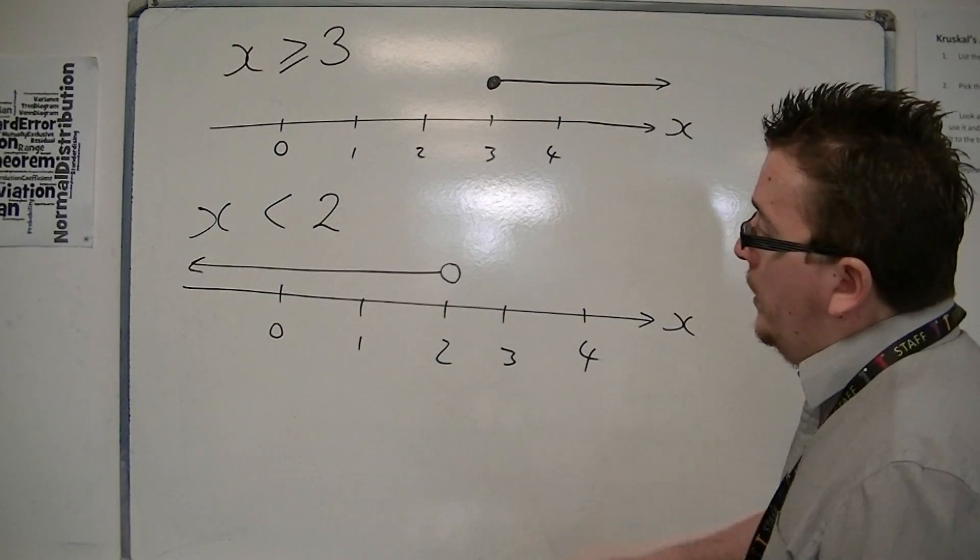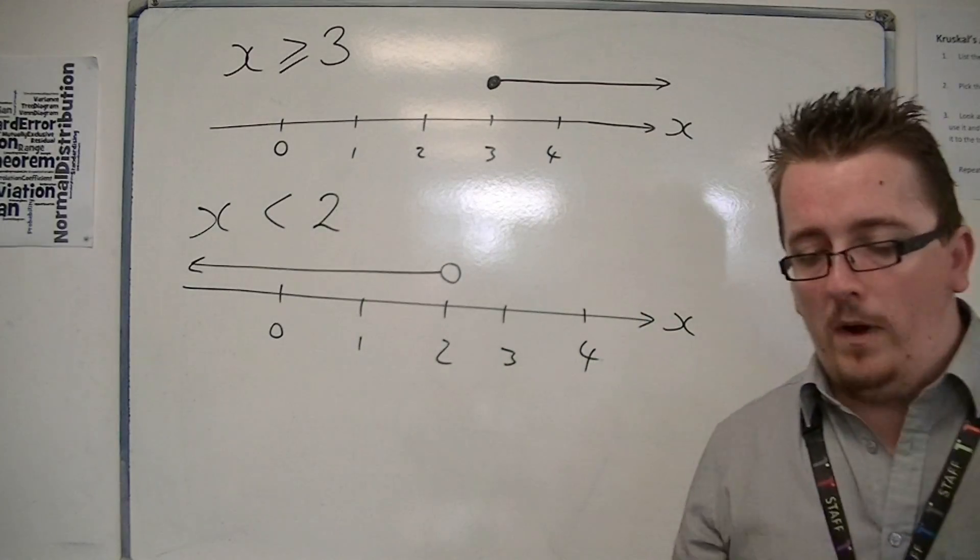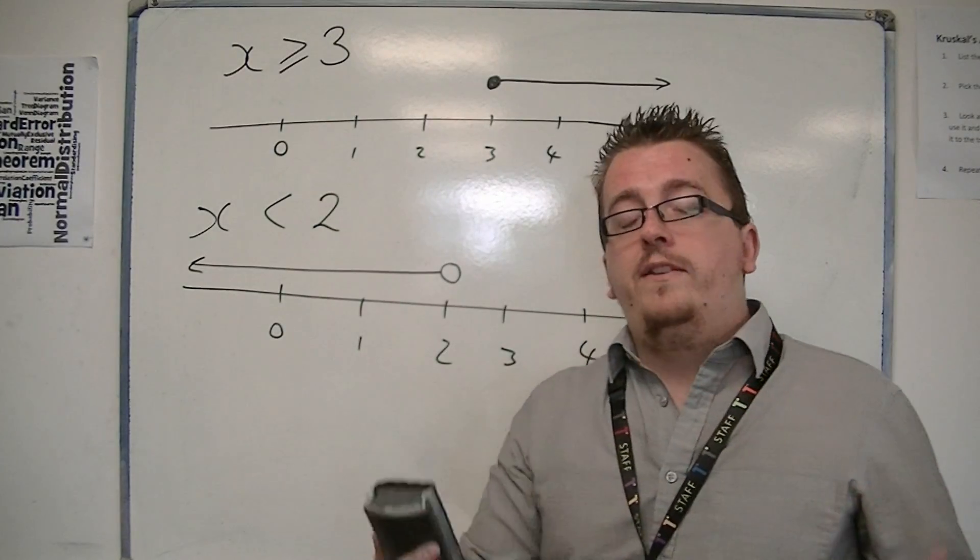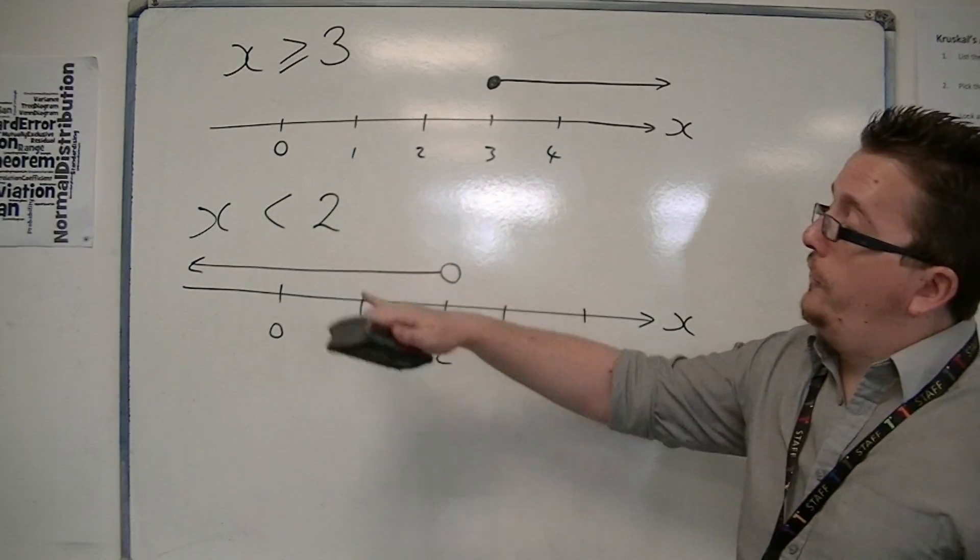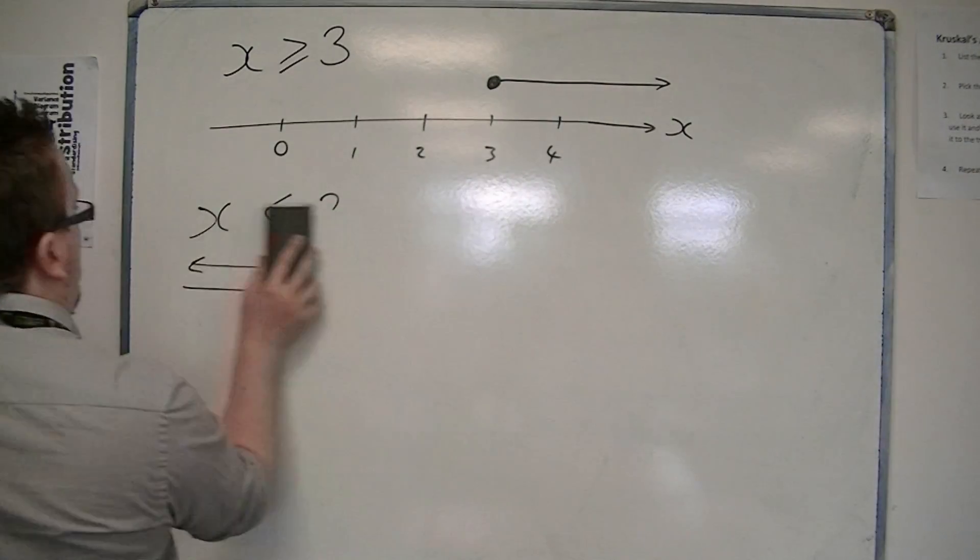And that's how we could represent them on a number line. So this is how inequalities can be represented that way, just using the basic symbols. So we've got greater than, greater than or equal to, less than or less than or equal to. And those are the basic ideas.